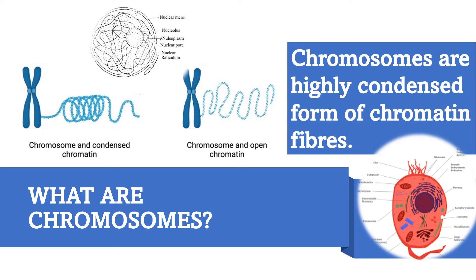Where can you see these chromatin fibers? Chromatin fibers are present inside the nucleus. The nucleus is in all cells — even plant and animal cells — and it is the control center of the cell. Inside the nucleus there are chromatin fibers, a nucleolus, and nucleoplasm. These chromatin fibers condense to form chromosomes.